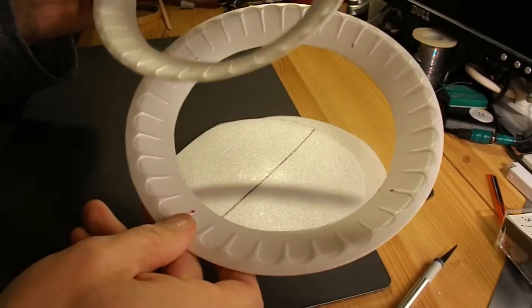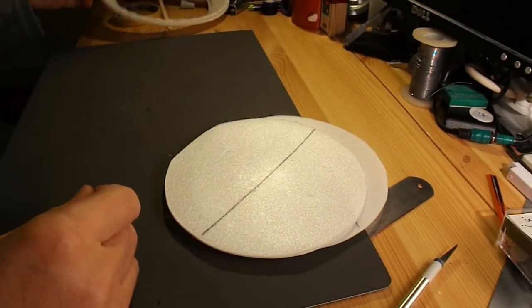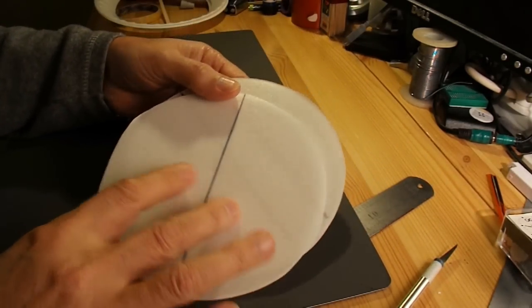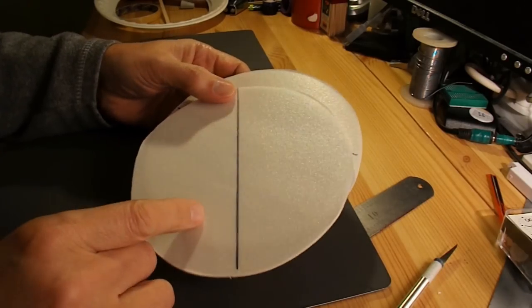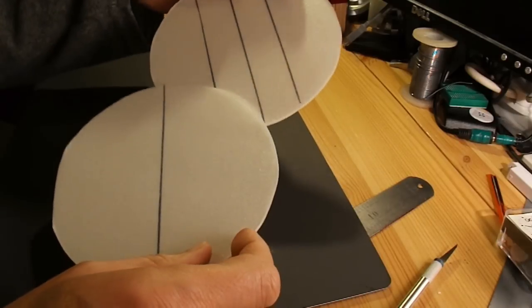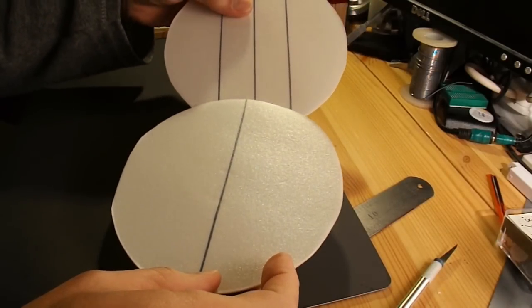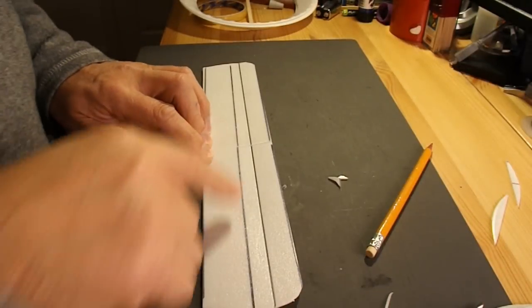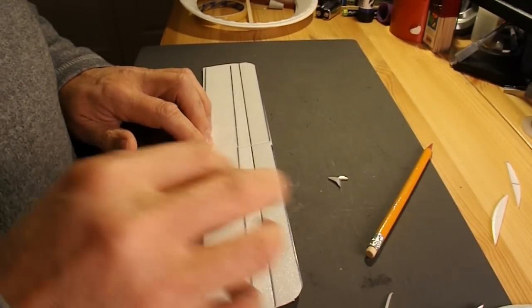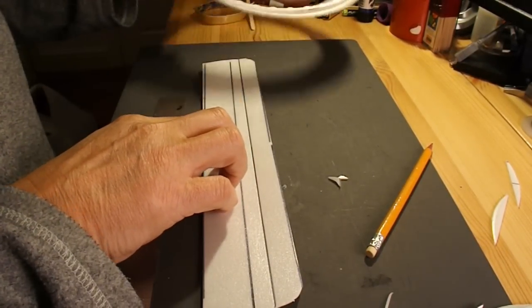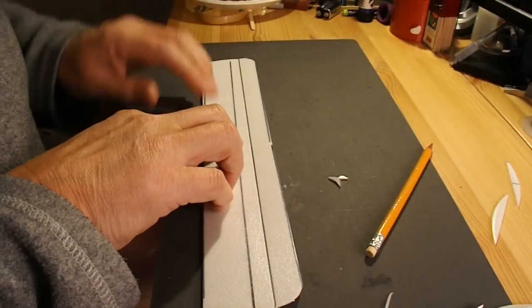First thing I've done is cut the bottoms out of two of the plates just to give me some reasonably flat pieces of polystyrene that I'll then cut out to make the wings. Right I've cut two wings out of the three discs that I've cut out of the centre of the plates.